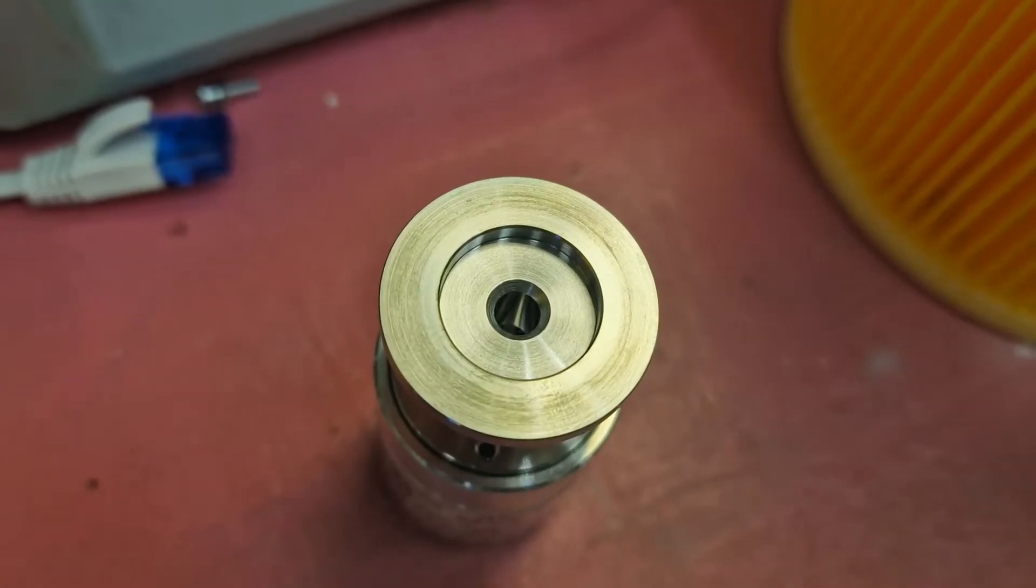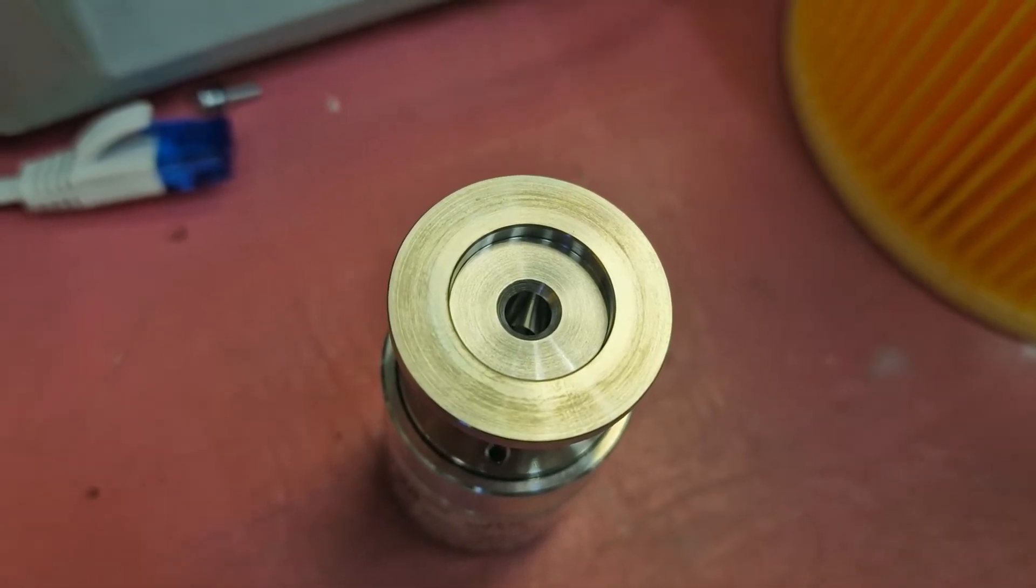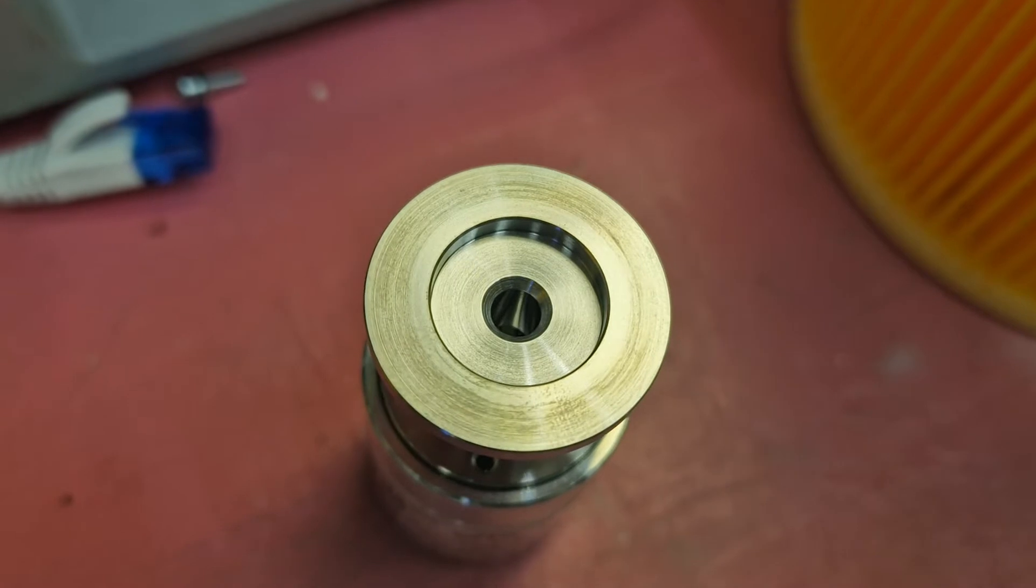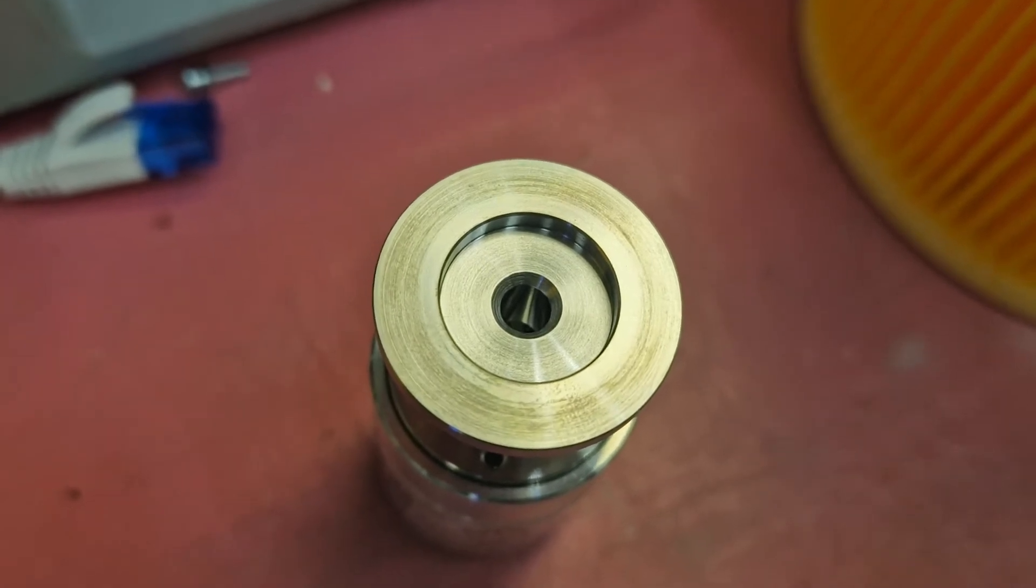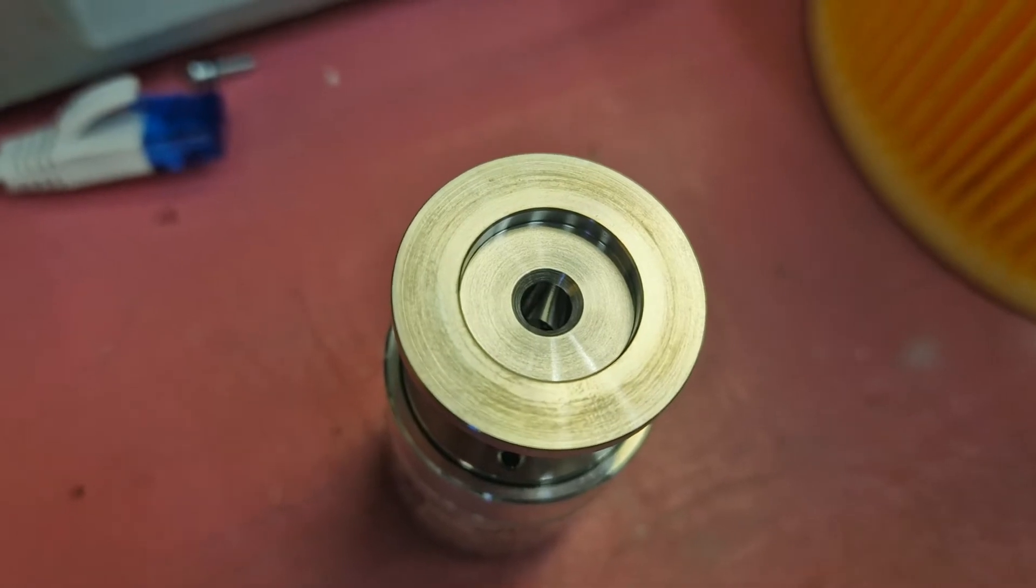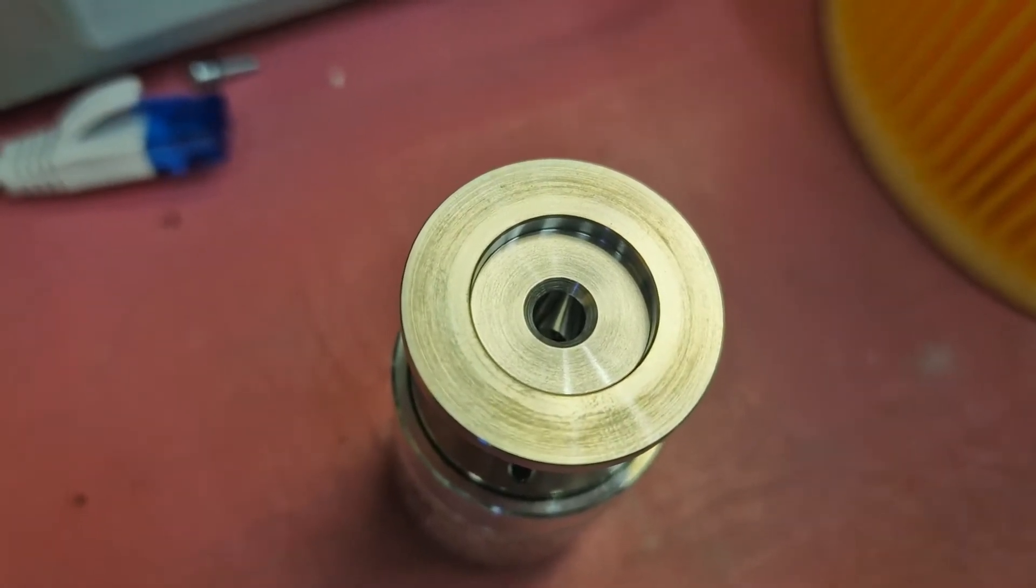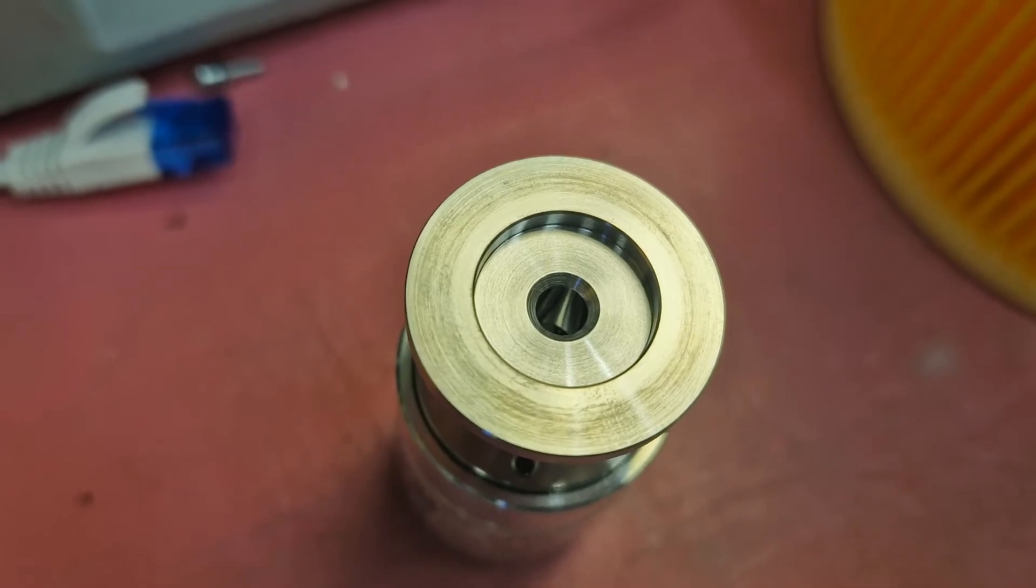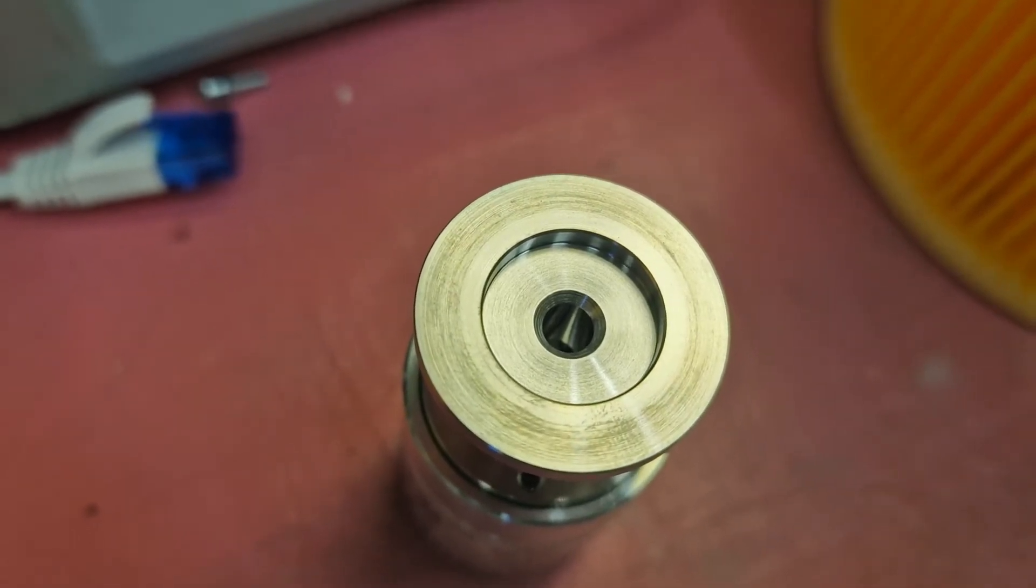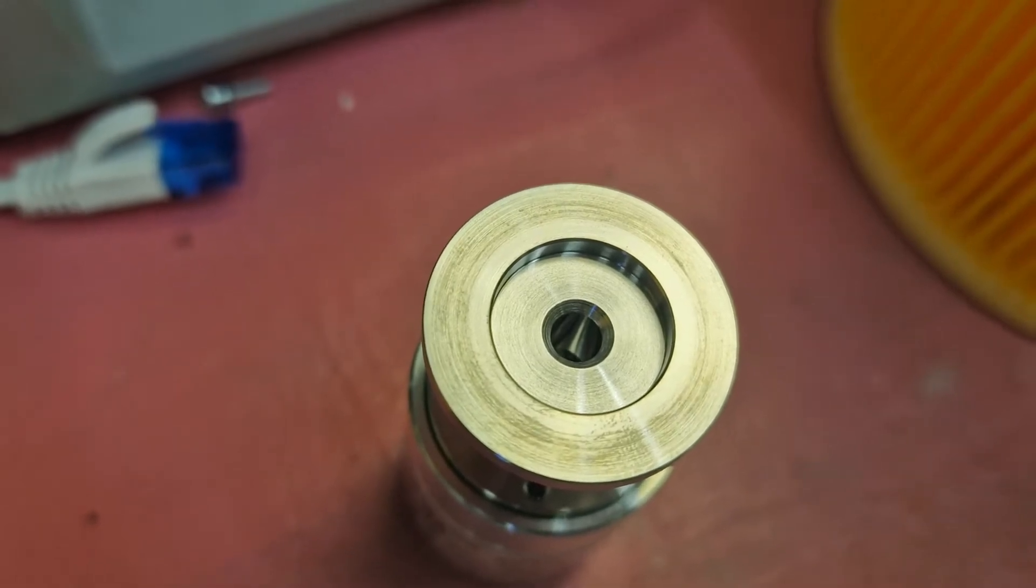One thing that can be done now is to use isopropanol and pour it into that little hole so it goes down to the actual sensor and shake it a little bit. Leave it there for one minute, take the isopropanol out, repeat it one or two times and then see if maybe it was just some dirt on the sensor that interfered with the readings.